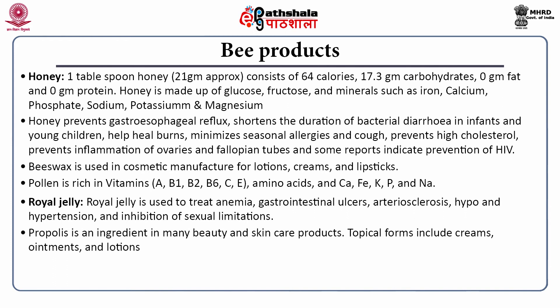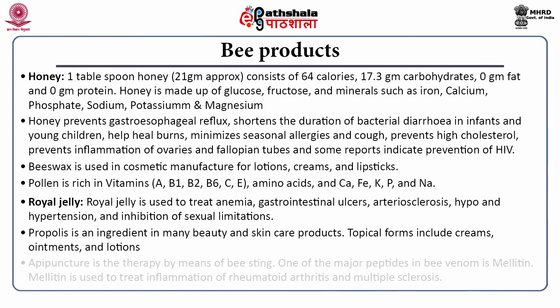Propolis is used in many beauty and skin care products; topical forms include creams, ointments and lotions. Apipuncture is therapy by means of bee sting. One of the major peptides in bee venom is melittin, which is used to treat inflammation in rheumatoid arthritis and multiple sclerosis.